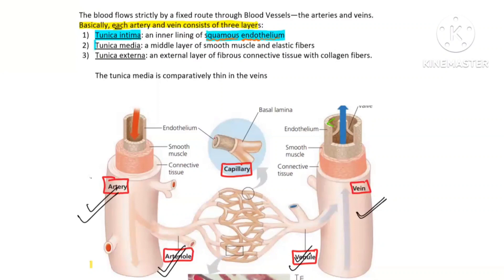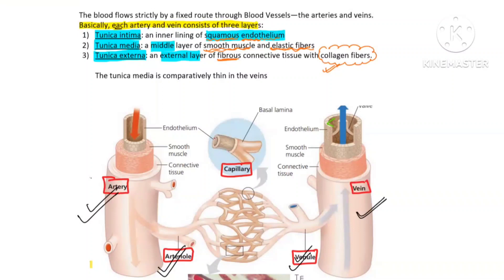The second layer is tunica media — the name tells us it is the middle layer. It contains a lot of smooth muscles as well as elastic fiber. Then there is tunica externa, the outermost layer, which consists of fibrous connective tissue — specifically collagen fiber. Collagen fiber gives strength to the blood vessels, while elastic fiber helps in recoiling the blood vessels when the ventricle goes into relaxation.